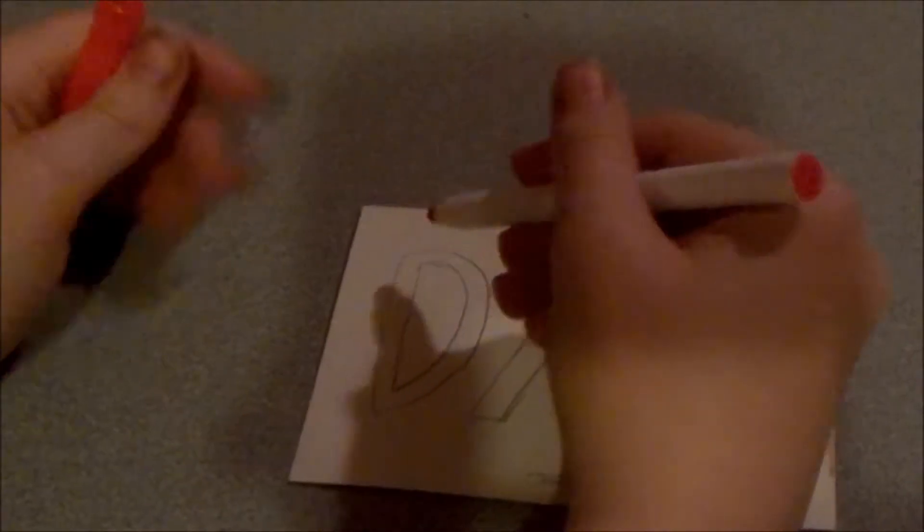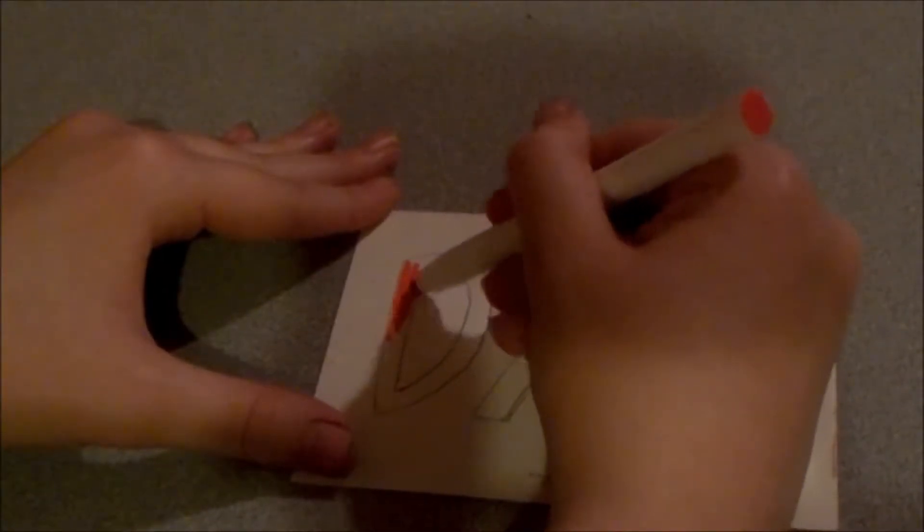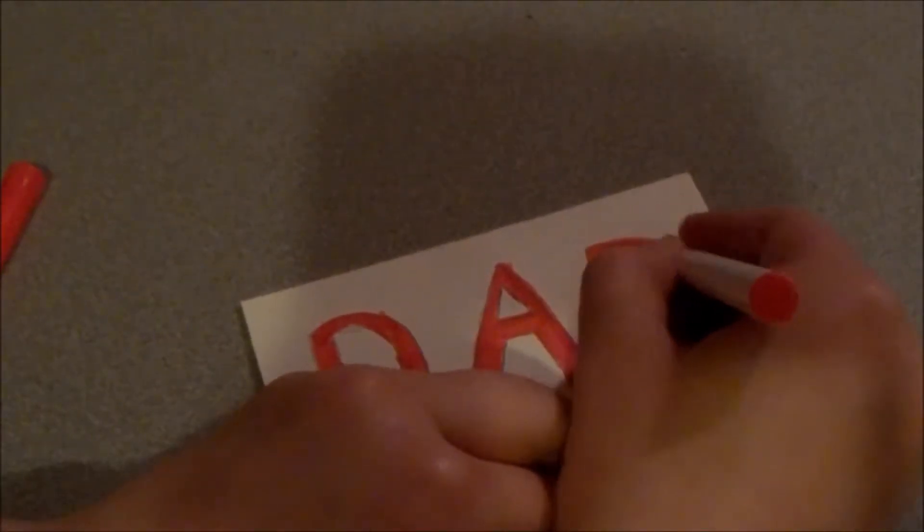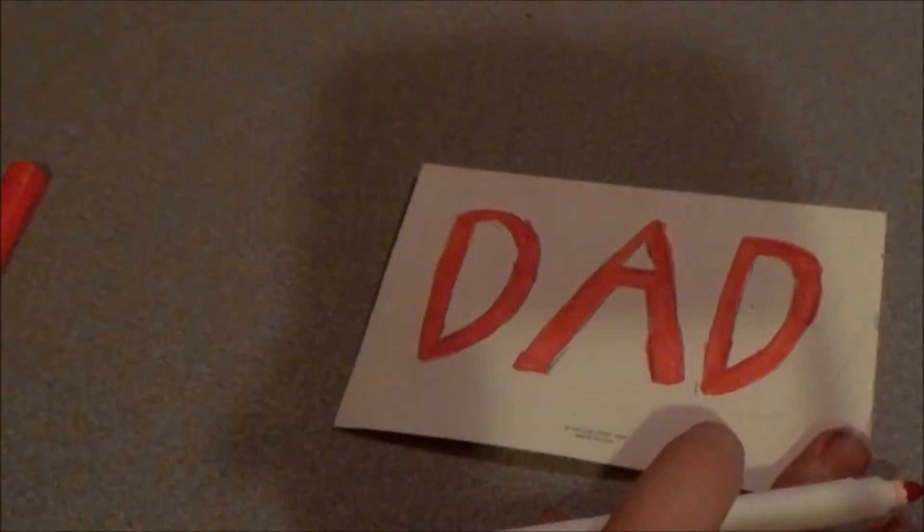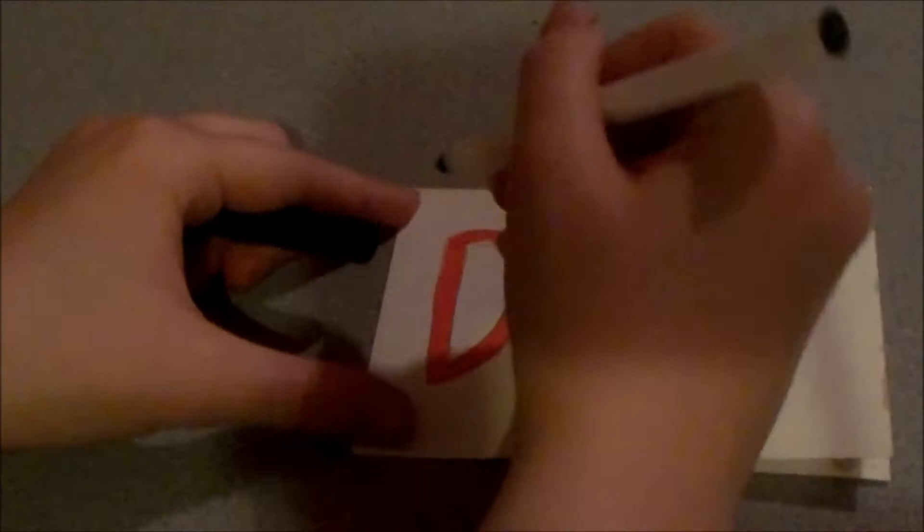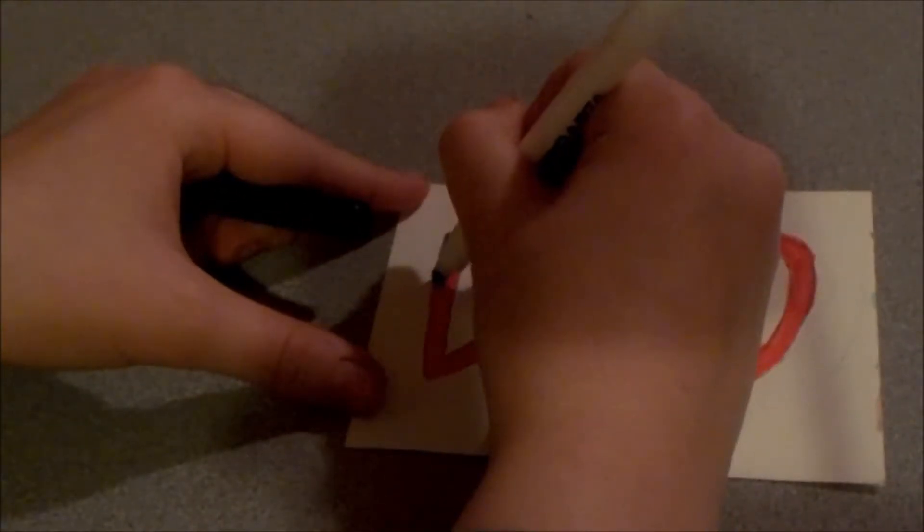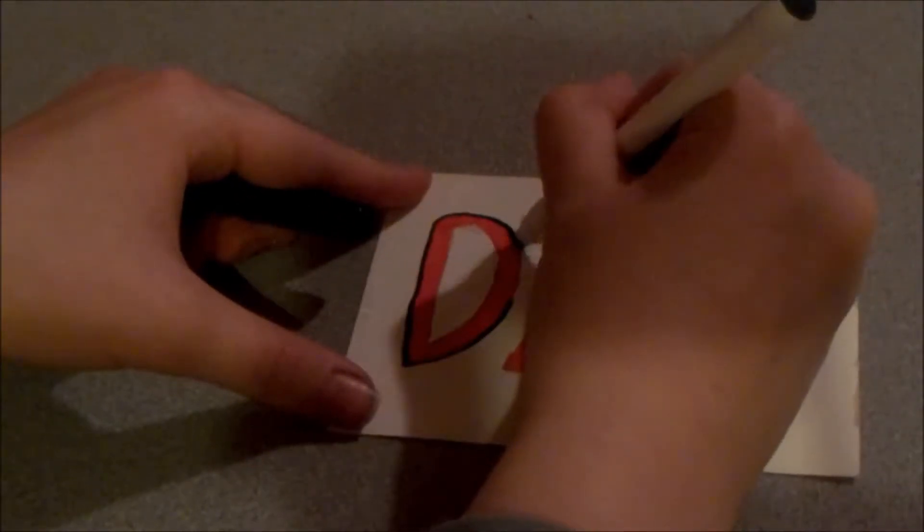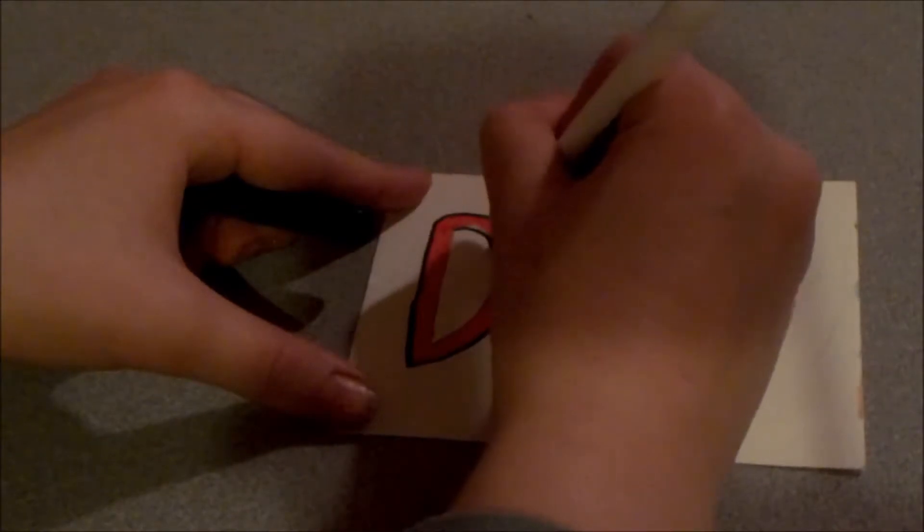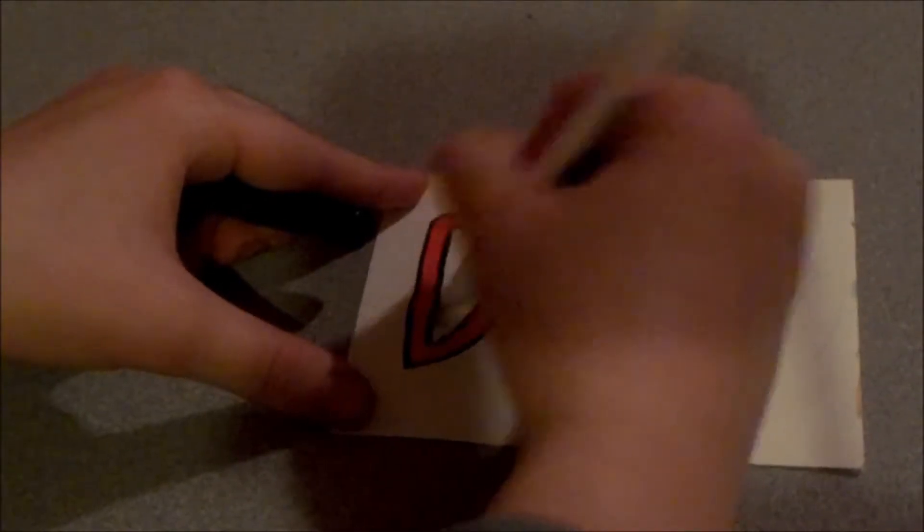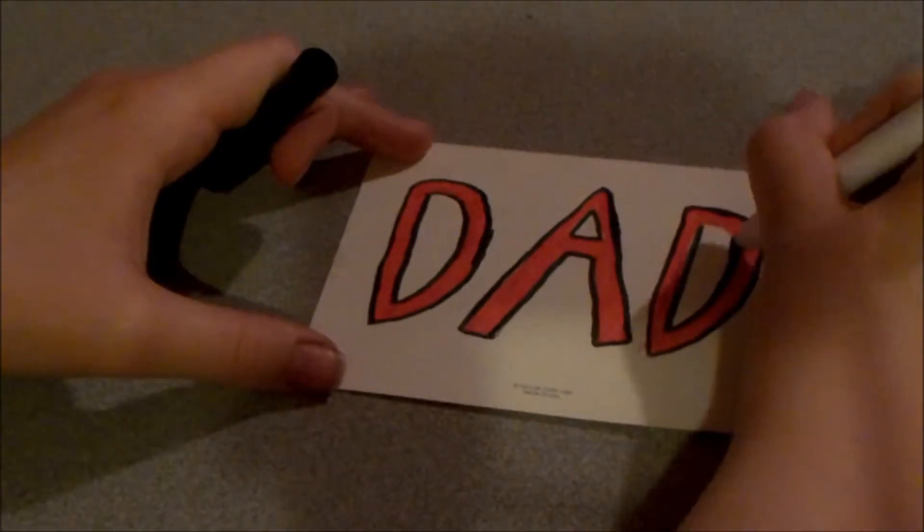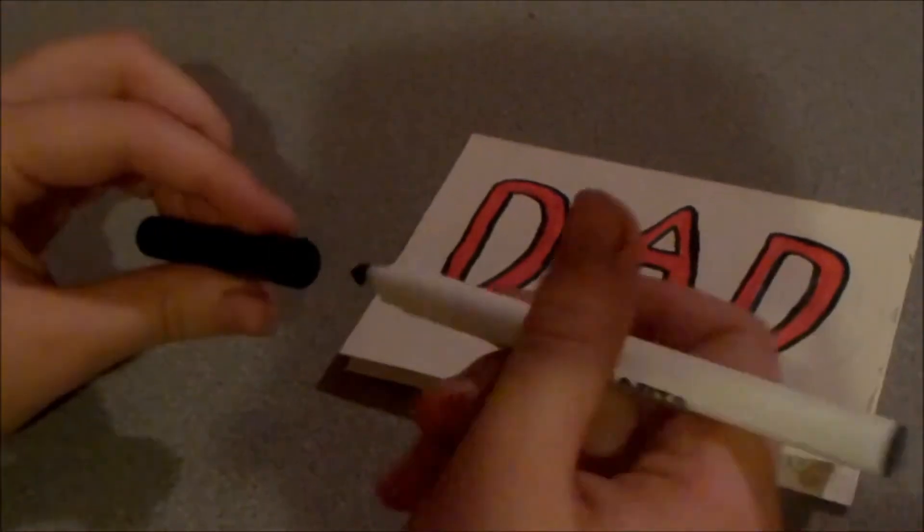And now we're going to fill it in with red marker. Start like this. Fill it in. Alright. It's all filled in. You guys know how to color. I don't need to show you that. So, now I'm going to take a black marker to outline it instead. Nice little outline, just like that. And I rounded it off just a little bit and then I colored in the rest of it. So, now this is our finished outline.